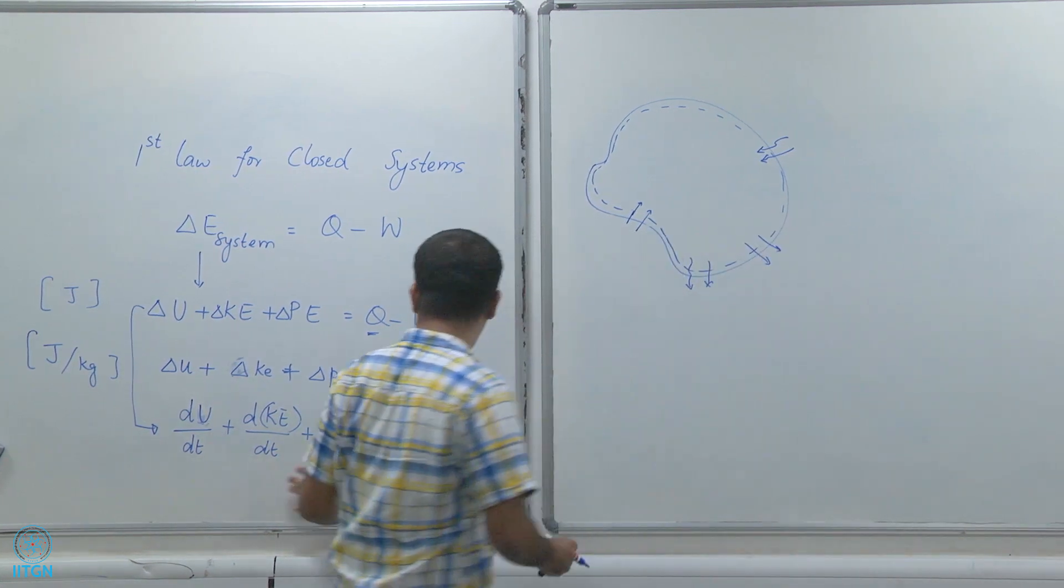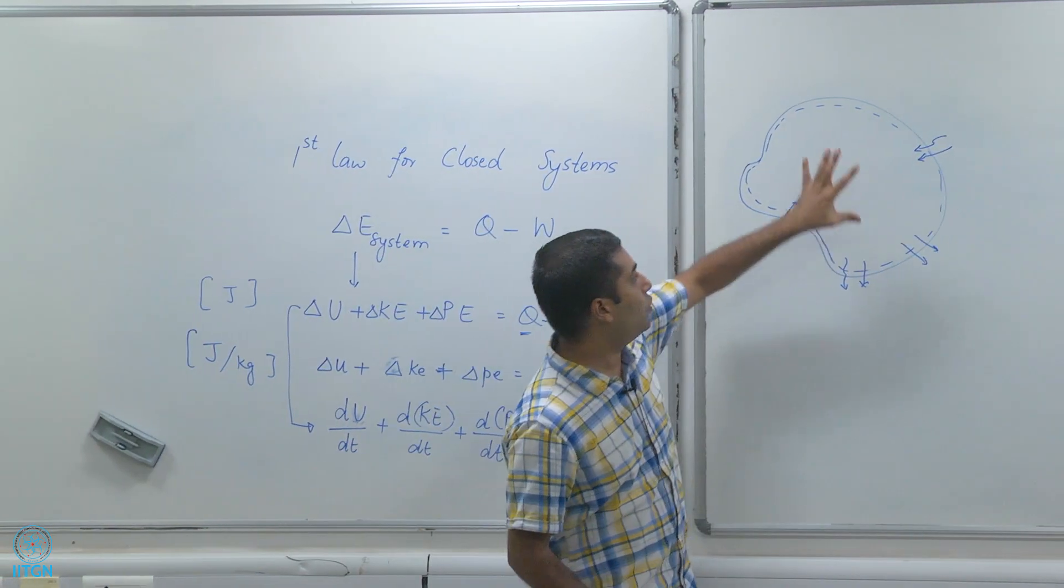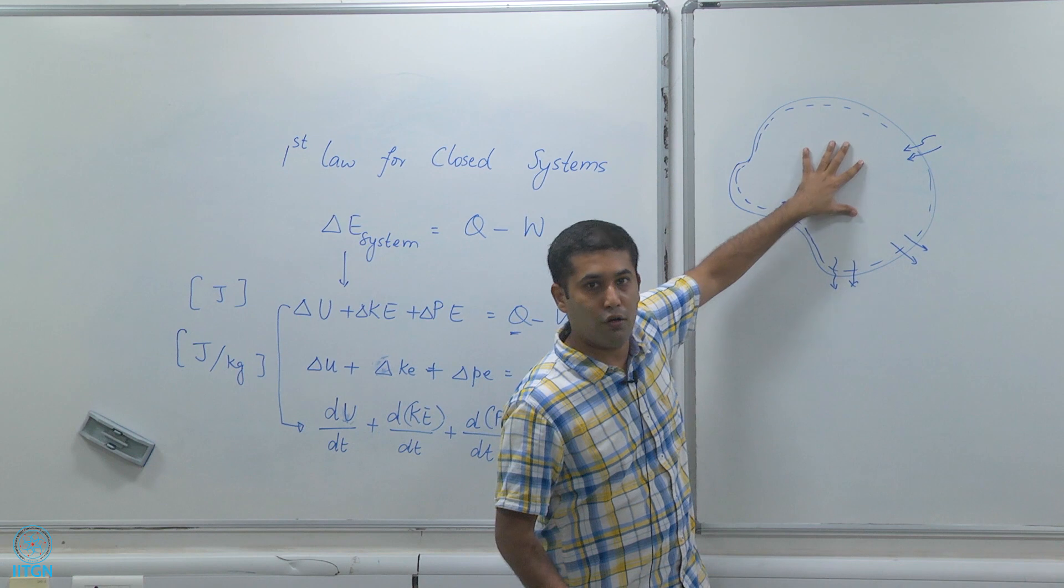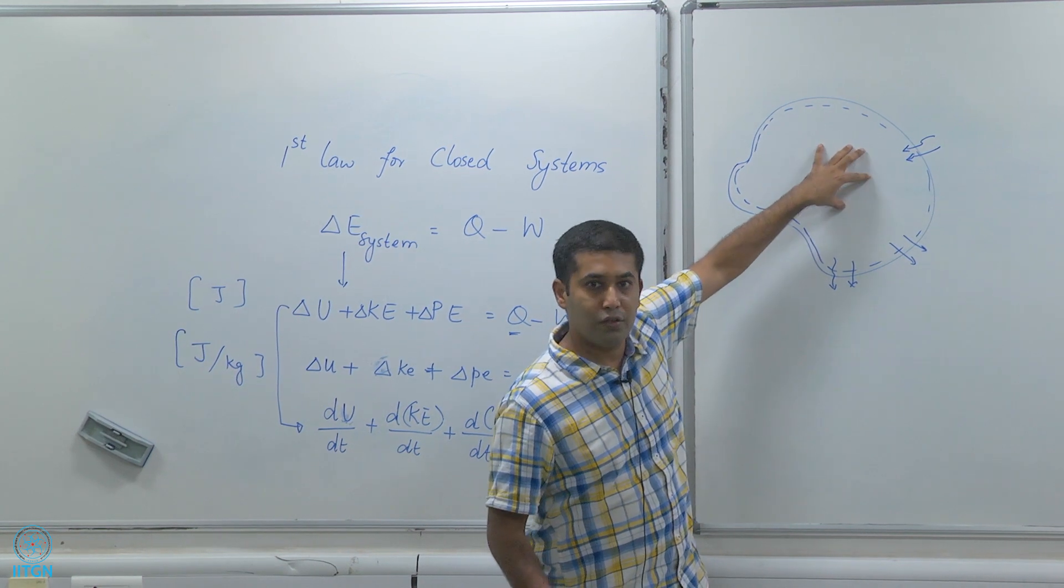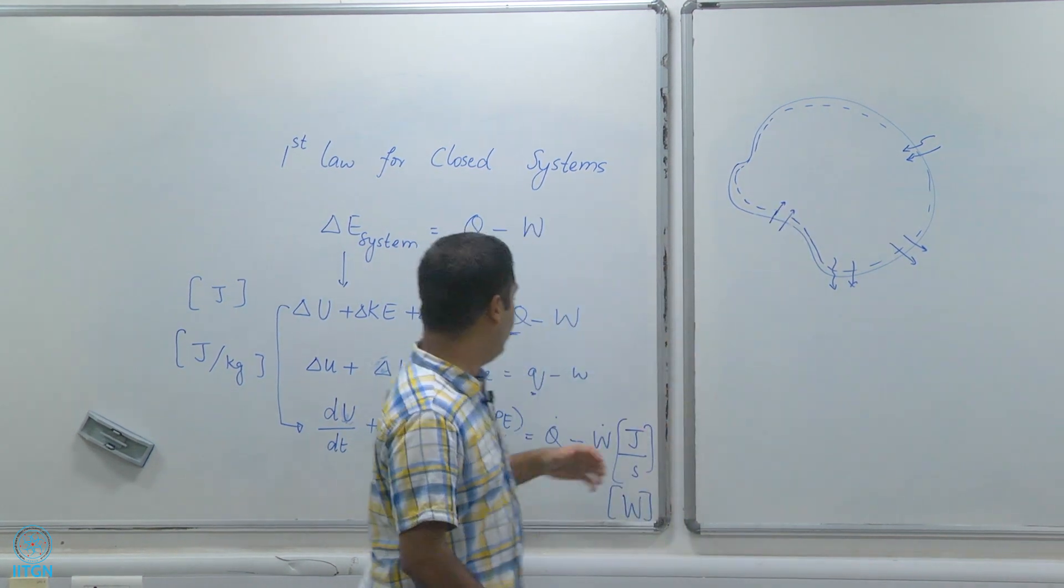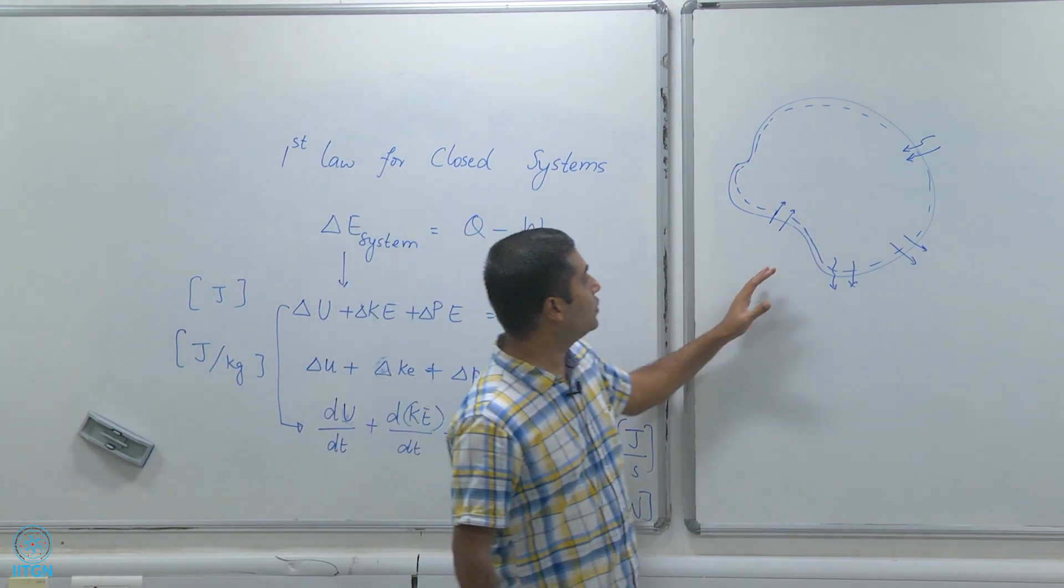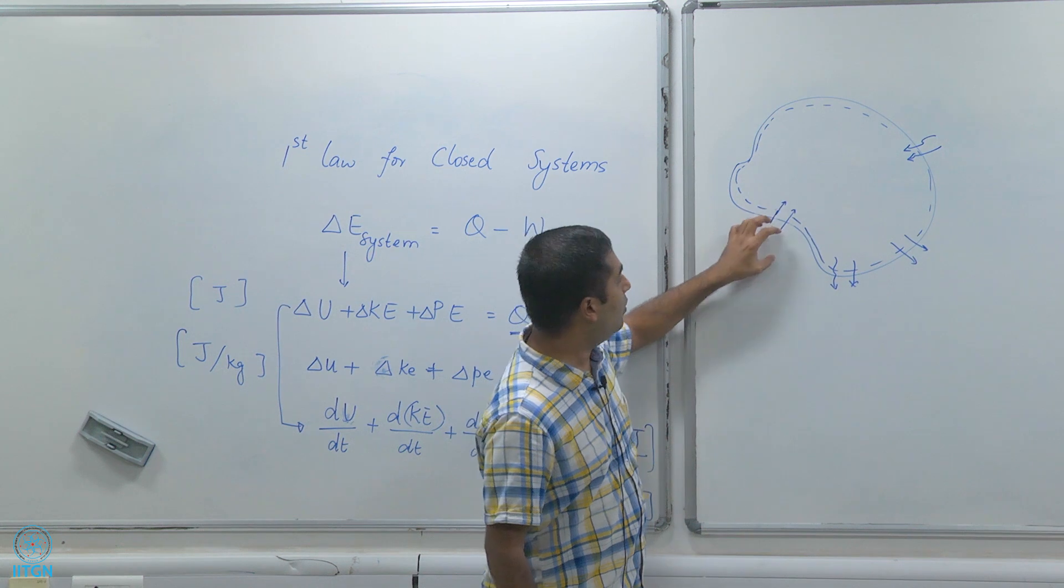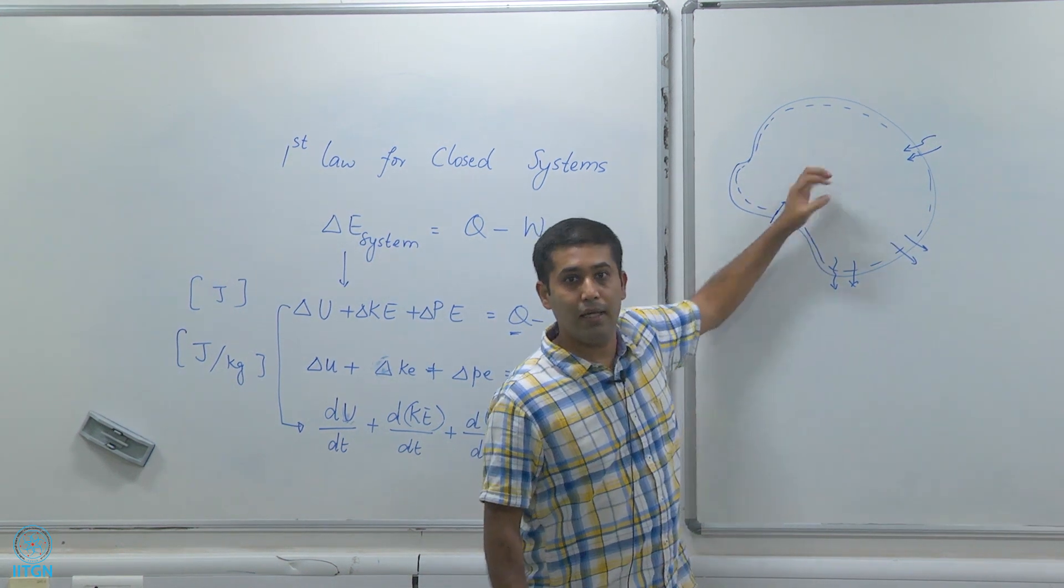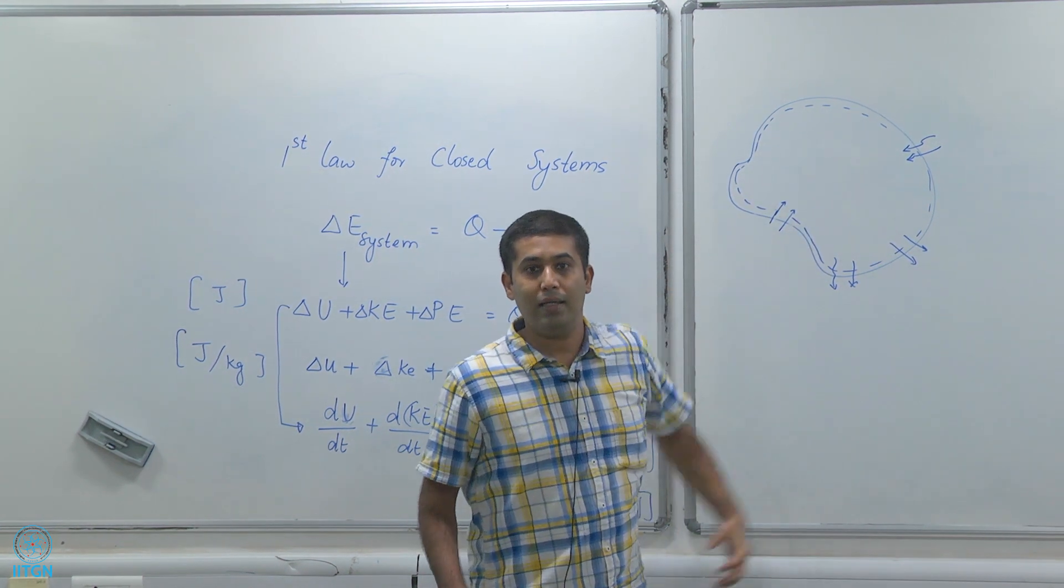Remember that whenever I am talking about the left hand side I am talking about internal energy of this system, kinetic energy of this system, potential energy of this system. Whereas when I am talking about the right hand side, I am talking about interaction - the rate of energy entering, the rate of energy leaving, heat addition rate, work rate.